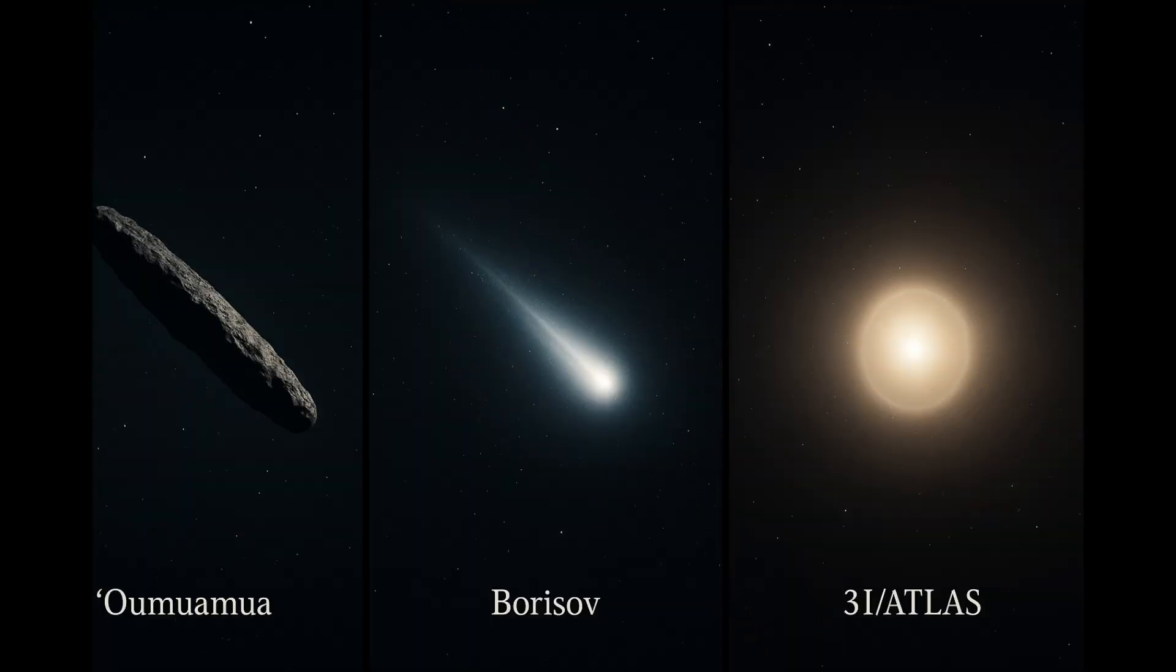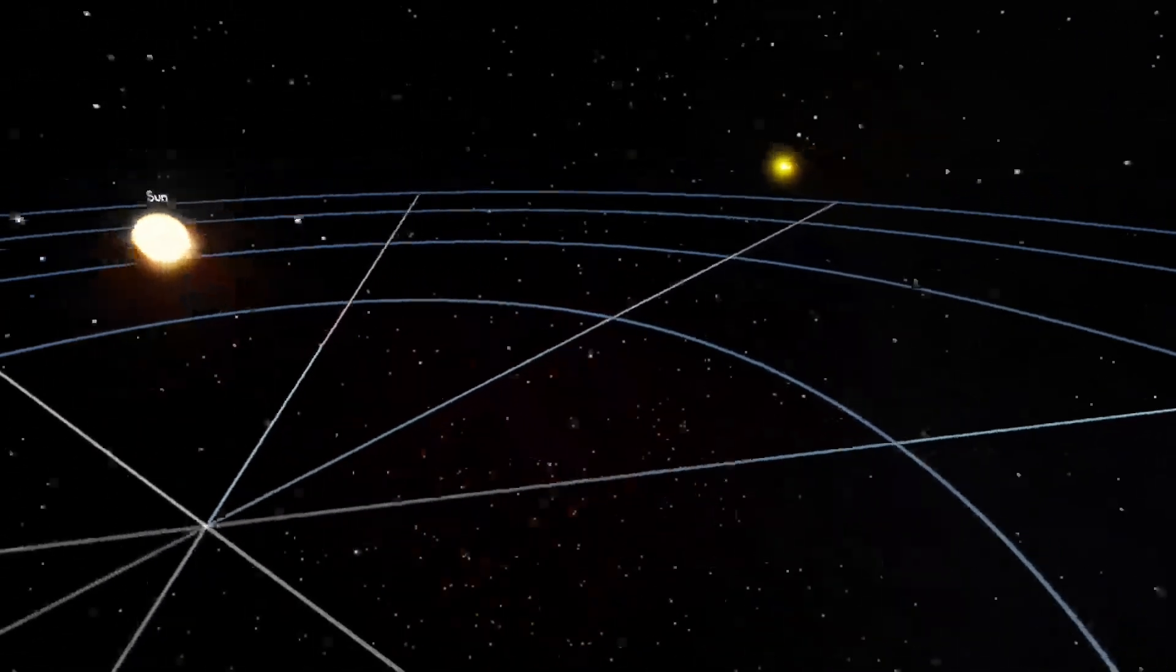Three confirmed interstellar objects define our entire empirical basis for extrasolar small bodies. 1I Oumuamua, October 2017.